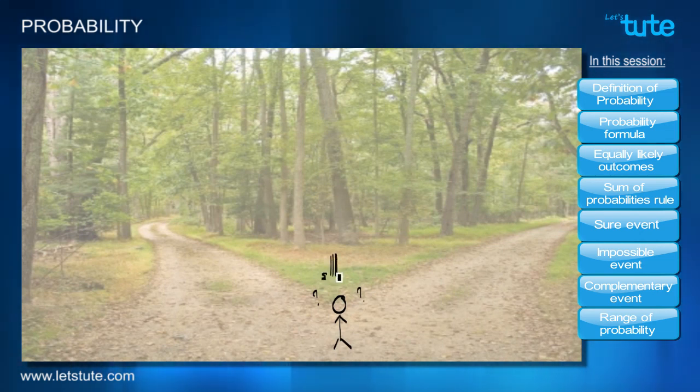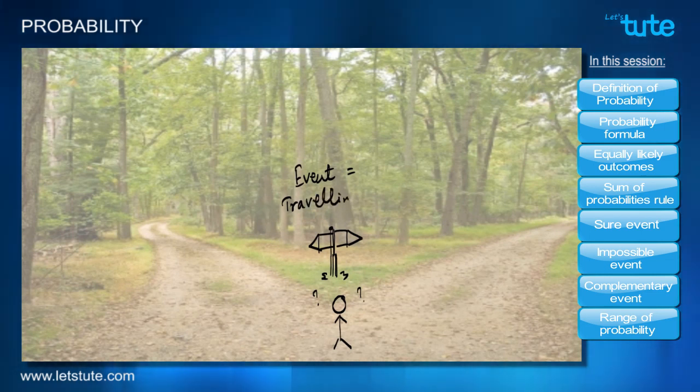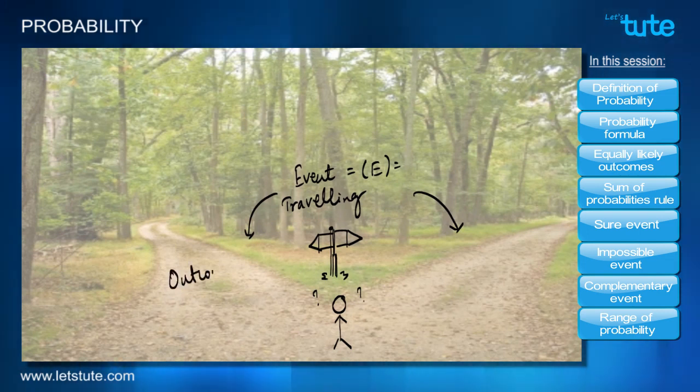The first thing that we naturally seek out is some kind of signboard or help or direction which can help us in making the decision between the two roads. So the event that is happening right now is traveling by a road, which we can denote as capital letter E, and clearly the two roads that we see in front of us make the outcome of this event.